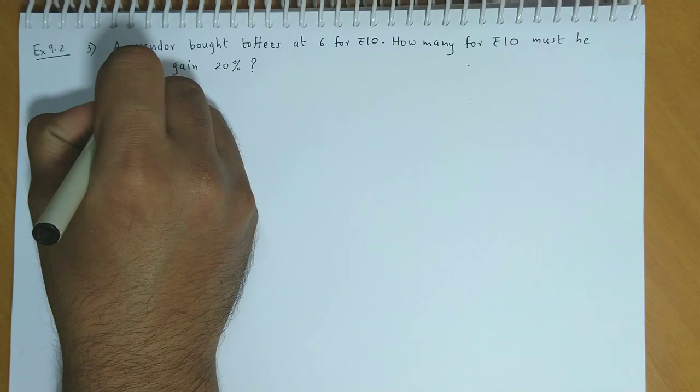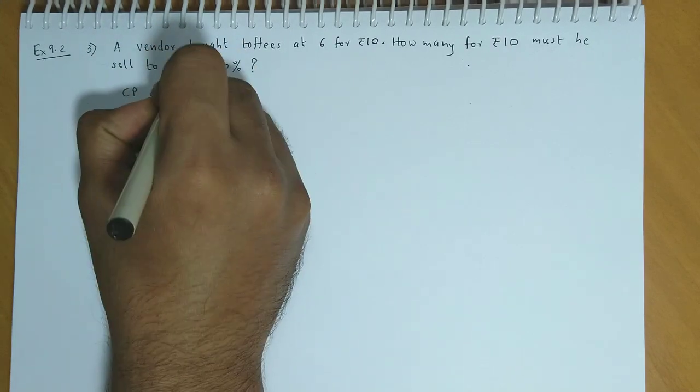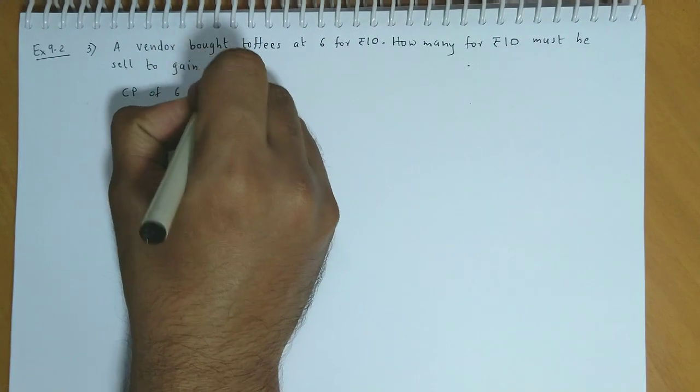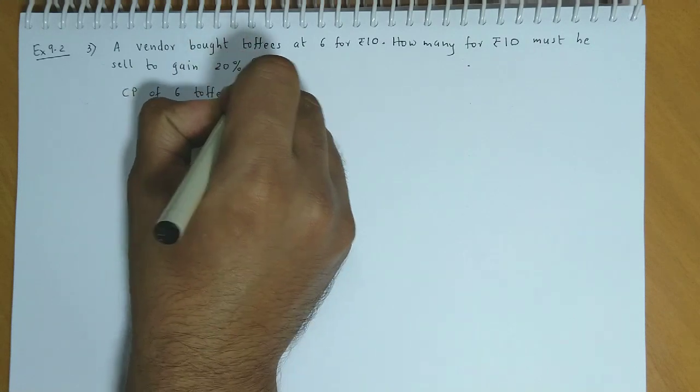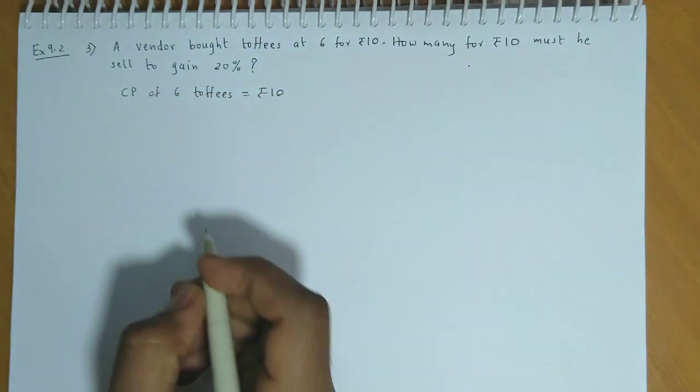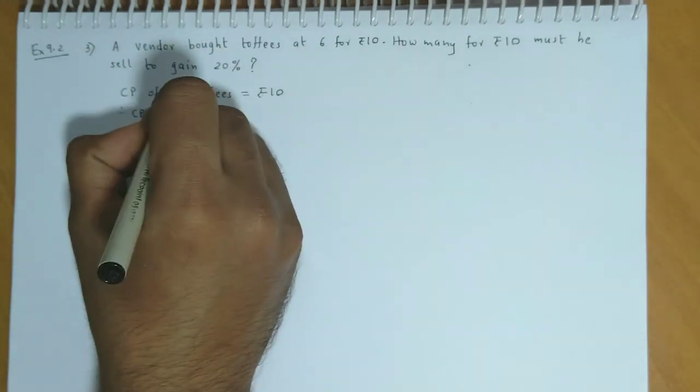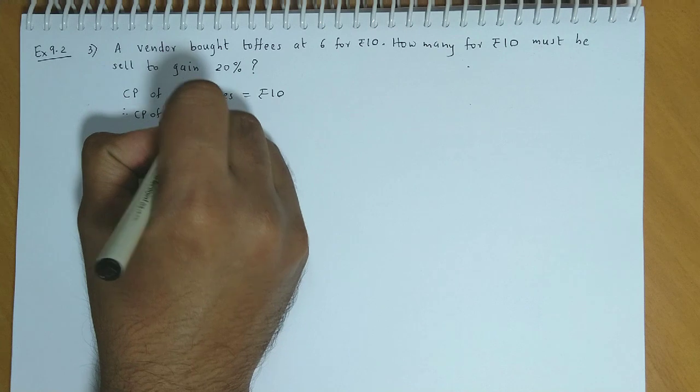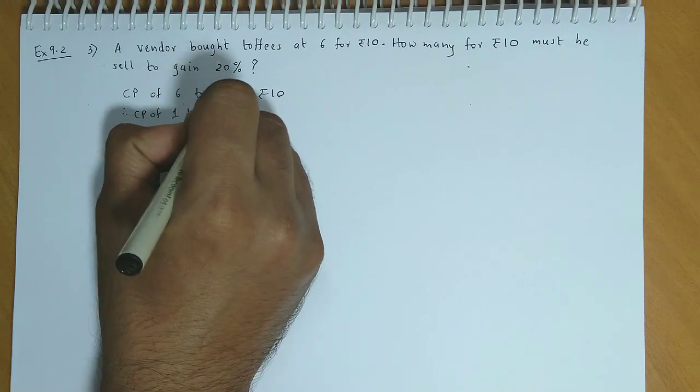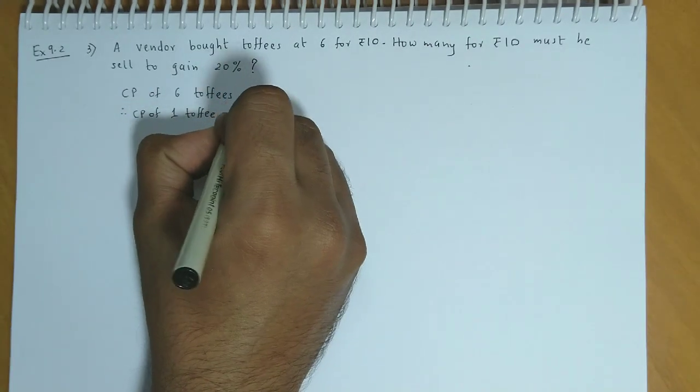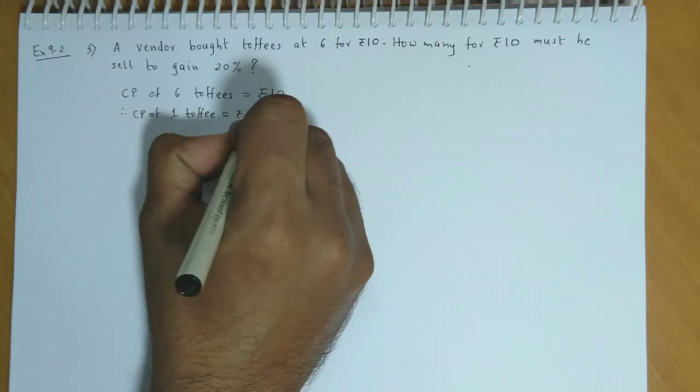Cost price of 6 toffees is rupees 10. Therefore, the cost price of 1 toffee is rupees 10 by 6.